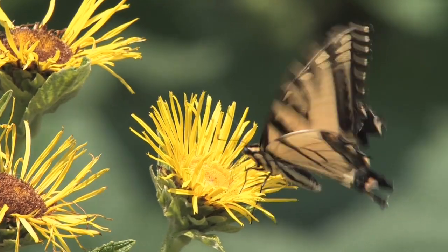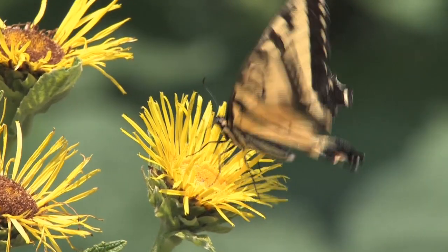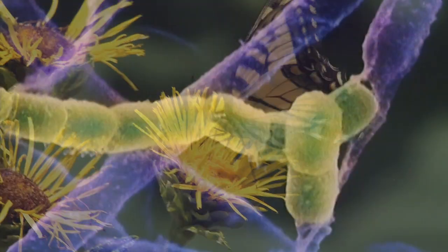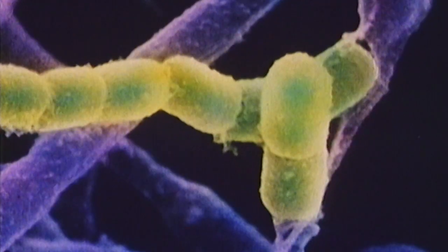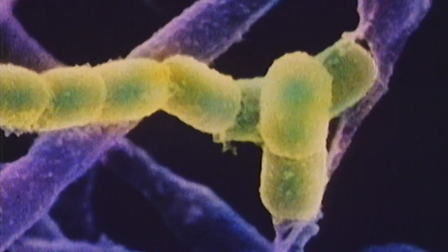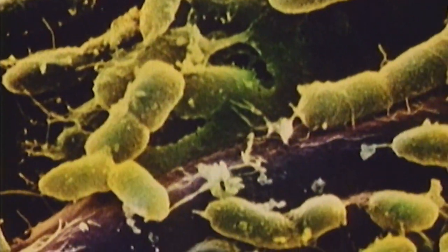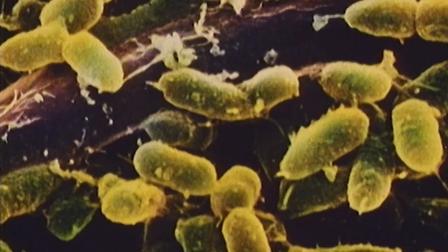People commonly understand how major plants and animals exchange genetic information, but the ways in which microbes like bacteria do something similar are often overlooked. Bacteria rely on several different mechanisms for the exchange of genetic materials.